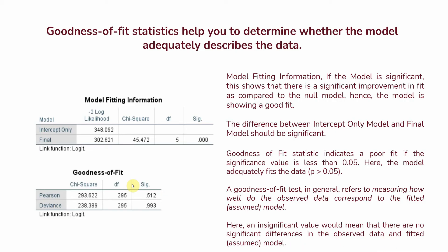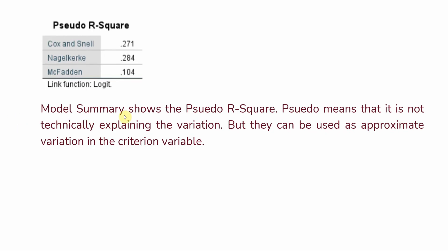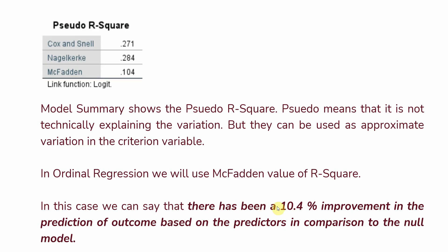The next thing is Pseudo R Square. This model summary shows pseudo R square values. Pseudo means it is not technically explaining the variation in the dependent variable, but it can be used as an approximate measure of variation in the criterion variable — in this case, interest. In ordinal regression we use the McFadden value of R Square, which here is 0.104, meaning there is a 10.4% improvement in predicting interest in studies based on the predictors compared to the null model.